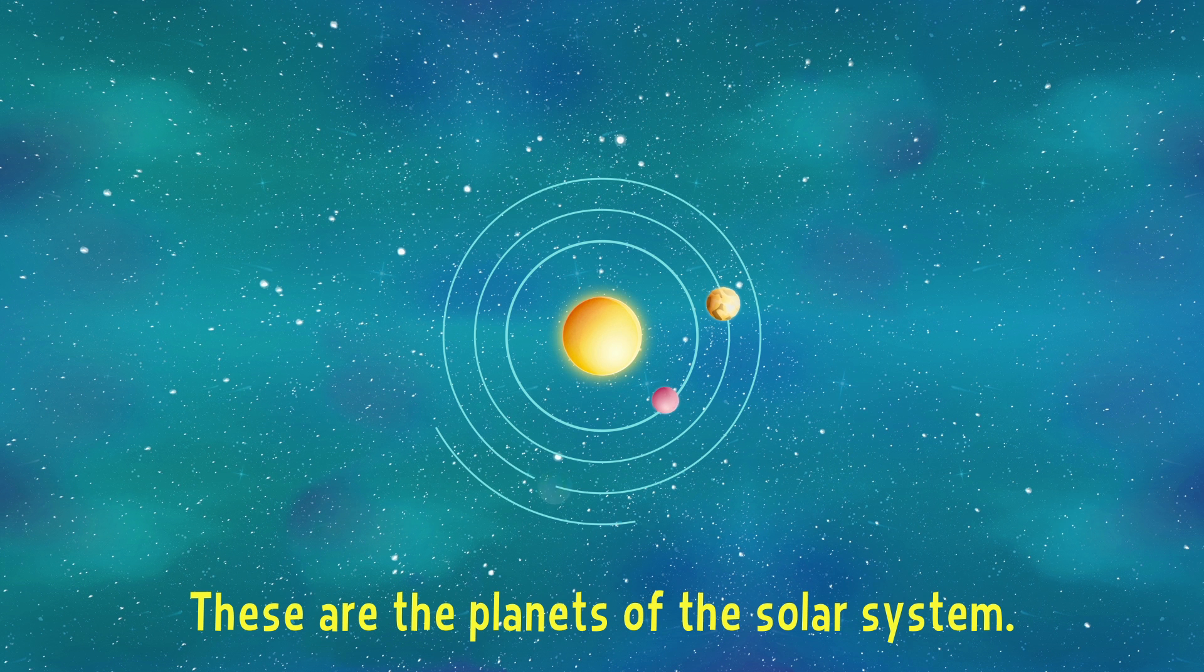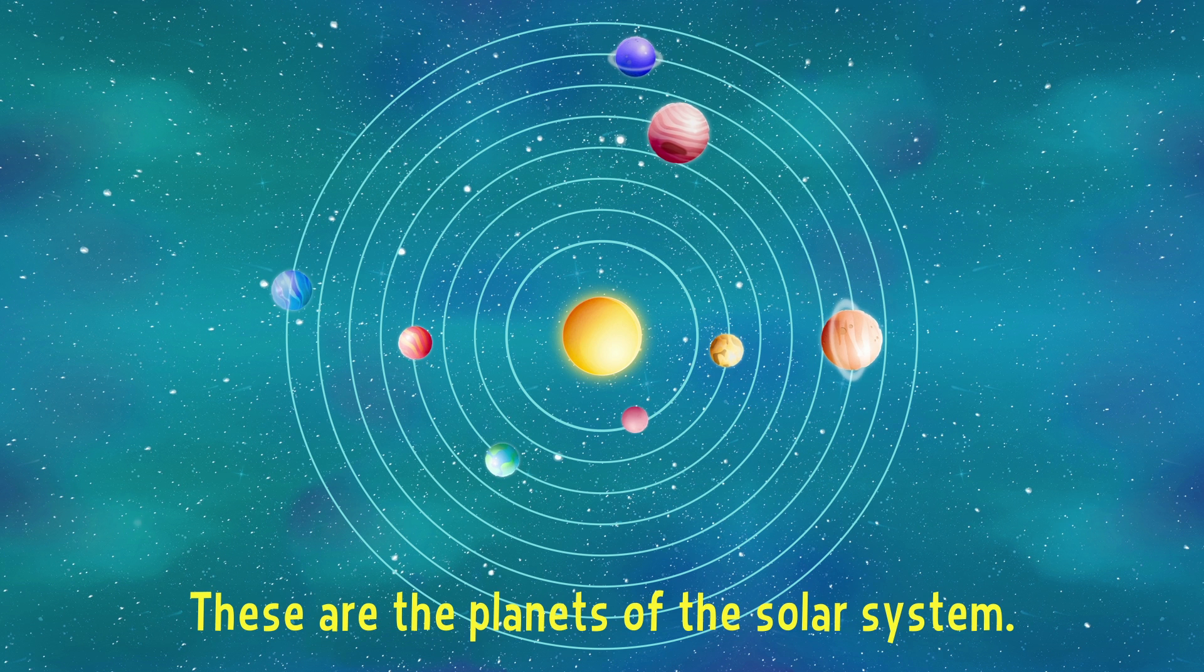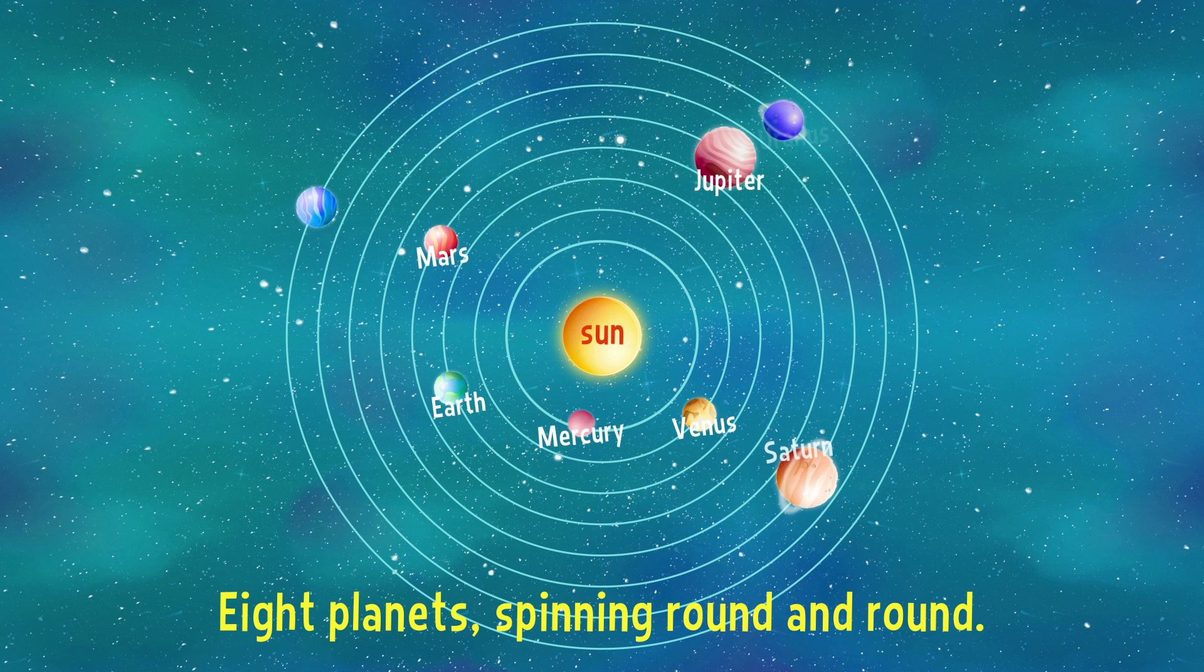These are the planets of the solar system. Eight planets spinning round and round.